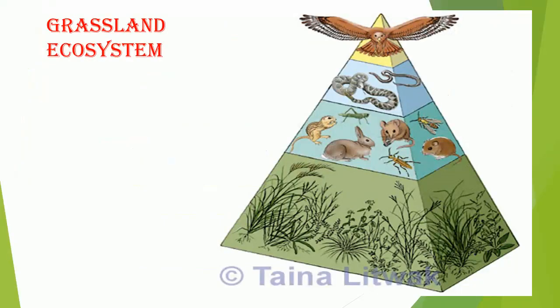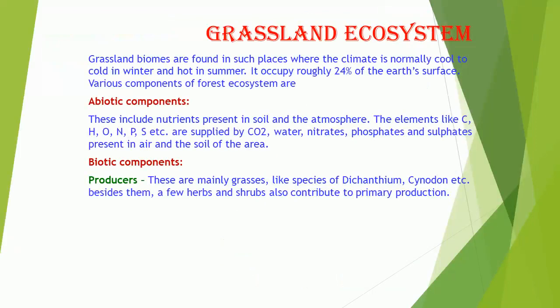Grassland Ecosystem. Grassland biomes are found in places where the climate is normally cool to cold in winter and hot in summer. They occupy roughly 24% of the earth's surface.